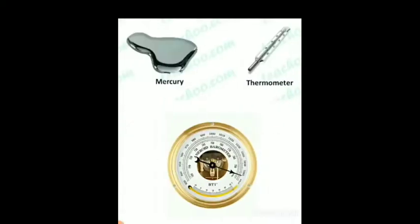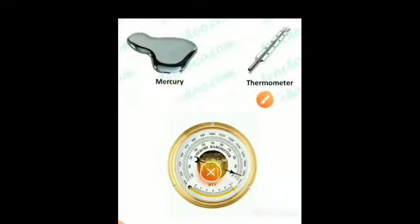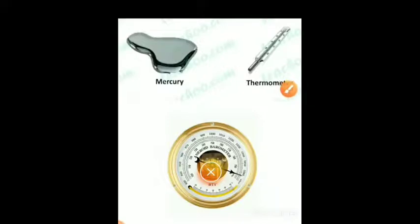Fourth use: Mercury. Mercury is liquid in state while others are solid. Mercury is used in thermometers and barometers. Thermometers are used to measure body temperature, and barometers are used to measure air pressure.